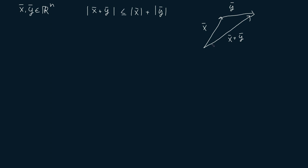But let's now prove the statement more formally. We're going to start by considering the fact that the square of the magnitude of a vector is equal to the dot product of the vector with itself. So if we have the magnitude of the vector x plus y squared, then it is equal to x plus y dotted with x plus y.